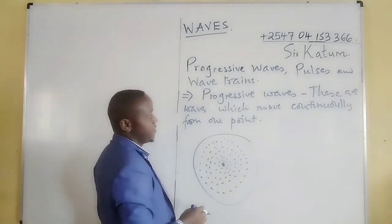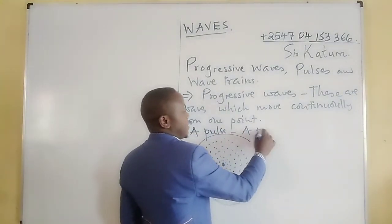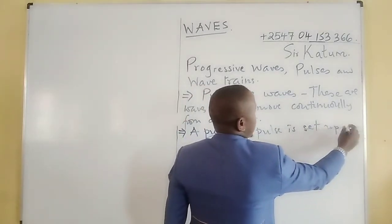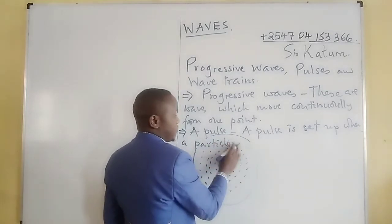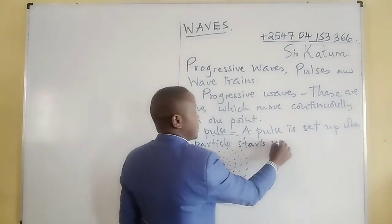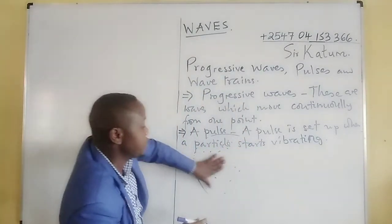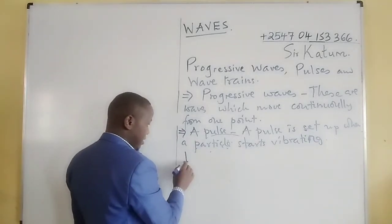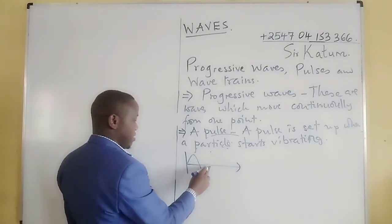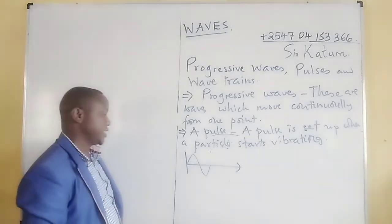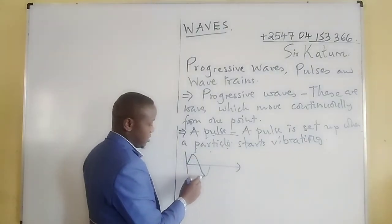Now, what we are calling a pulse: a pulse is set up when a particle starts vibrating. For transverse waves, this is when a particle covers one oscillation — it moves to a crest, then down again to the equilibrium position. This is one oscillation, and we say that is a pulse.